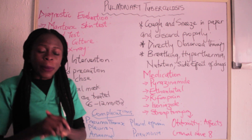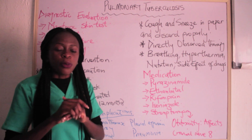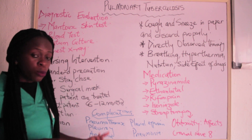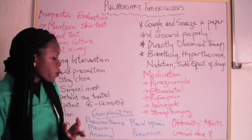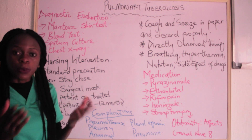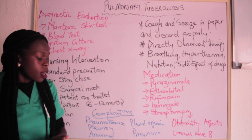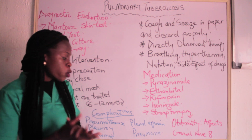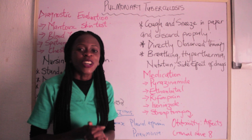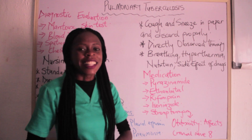In terms of complications of pulmonary tuberculosis, we have pneumothorax, pleurisy (also known as pleuritis), anemia, pleural effusion, and pneumonia.